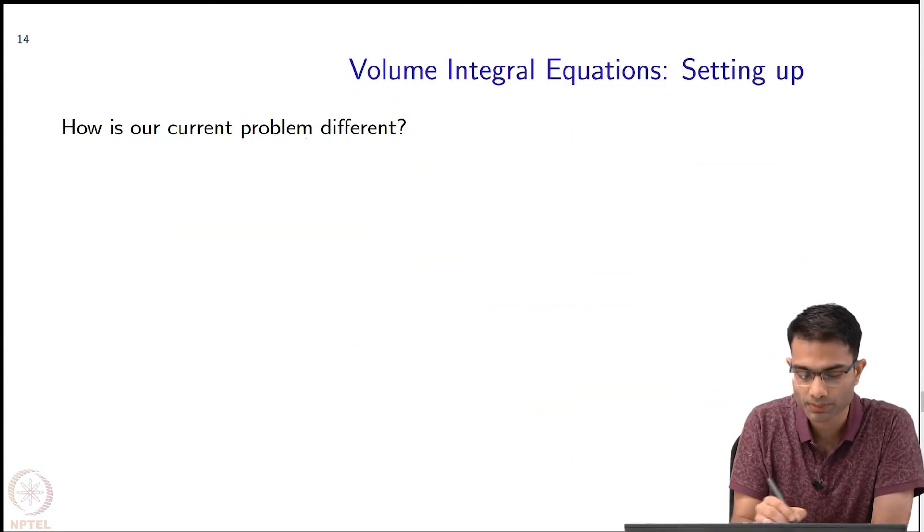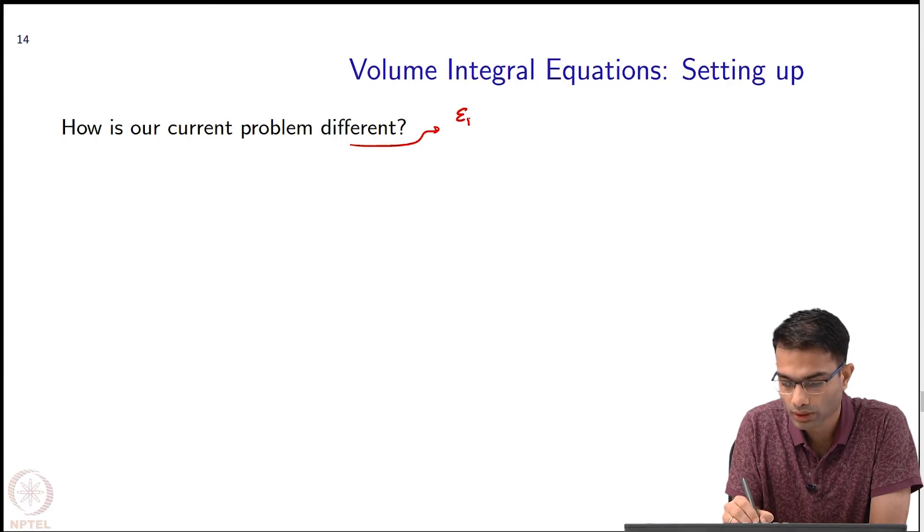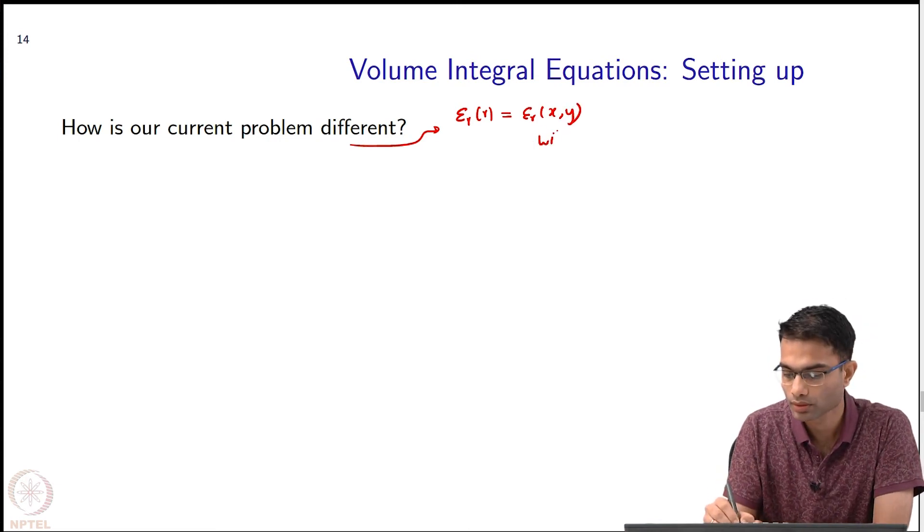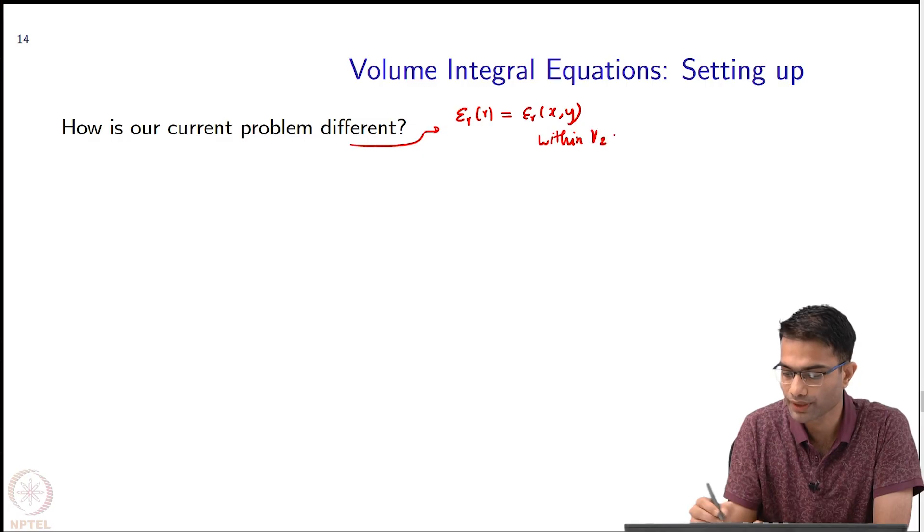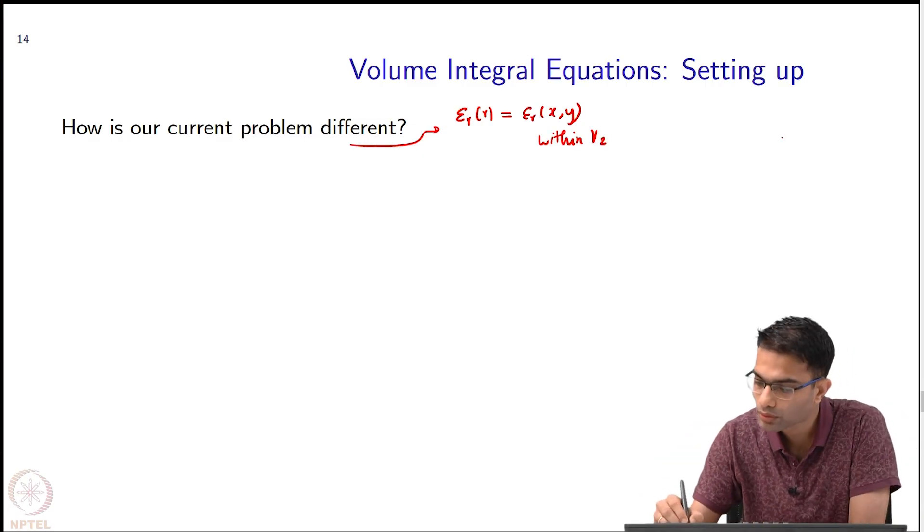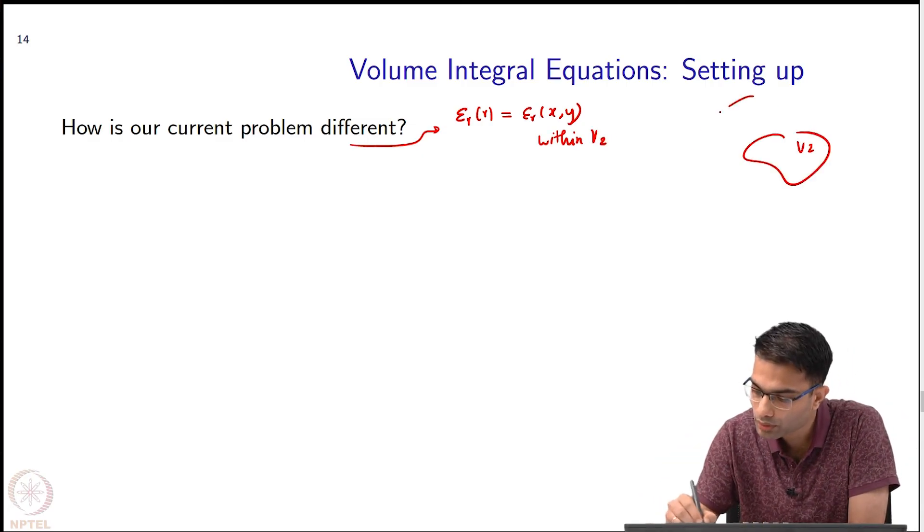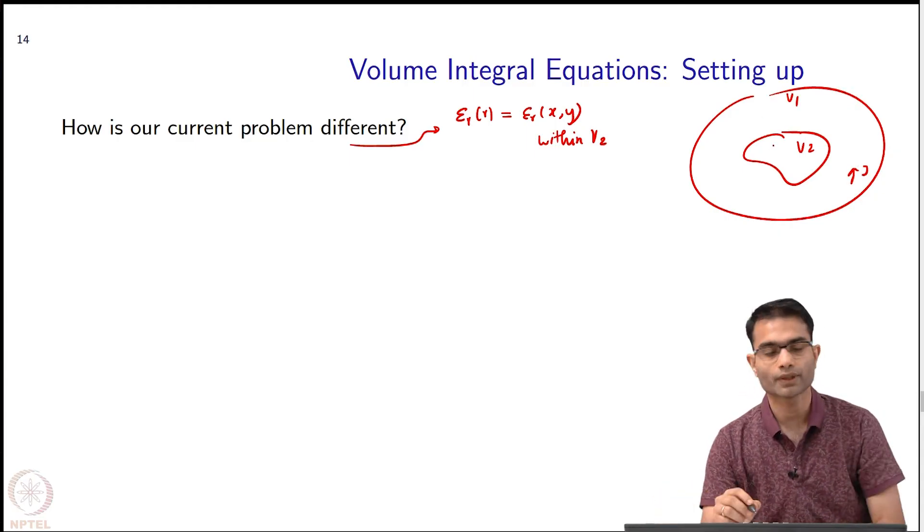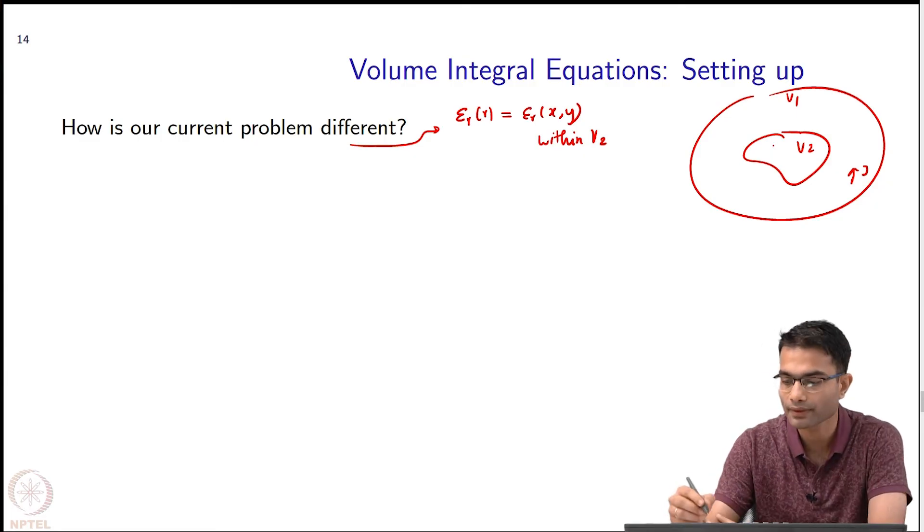How our current problem is different: as I have already said that epsilon r is actually a function of space within V2. This is V2. Within V2 this is varying as a function of x y.